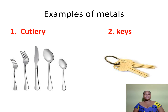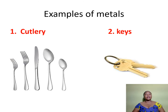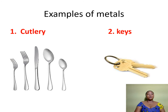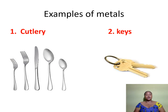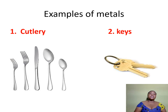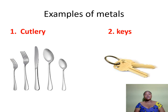So we have here cutlery — examples of metals. We have spoon, fork and knife. The second example is keys. So can you take the fork? I know you have a fork or a spoon in your house. You can put it inside fire and take it — you can't hold it, it will be very hot. So it conducts heat. Keys are used to open our doors. So they are all metals.